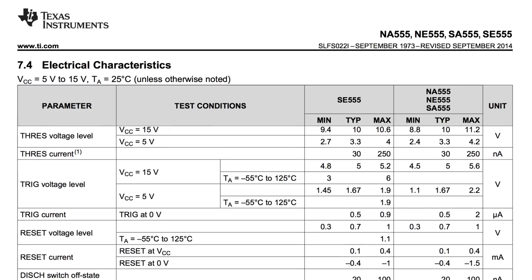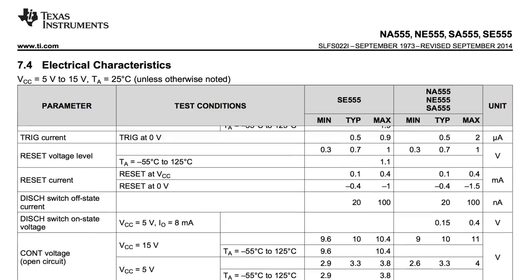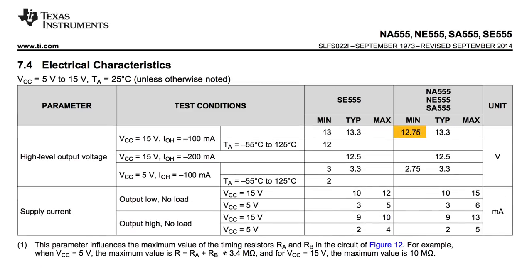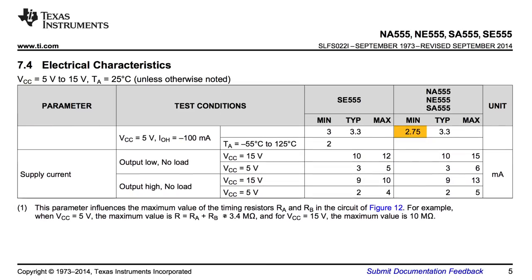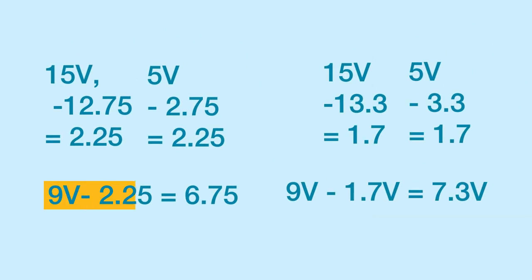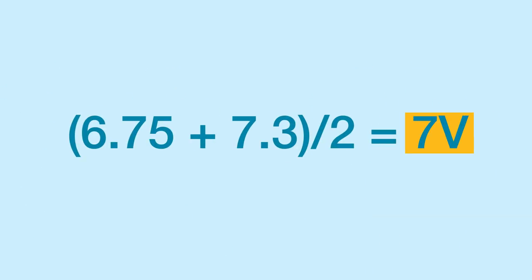Looking at the datasheet of the 555 timer, we're given the output voltages for if VCC equals 15, which is 12.75 minimum to a typical 13.3 volts. And if VCC equals 5 volts, then minimum output voltage is 2.75 with typical voltage of 3.3 volts. So if I use a 9-volt battery using the same math, then that would give me a minimum output voltage of about 6.75 volts and a typical of about 7.3 volts. I'll average those out and use an output of 7 volts when factoring resistance for my LED.